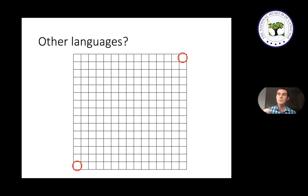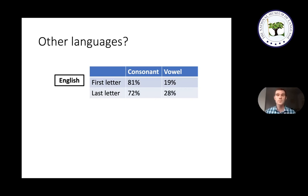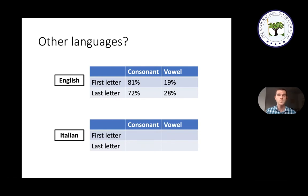To think about this, I'll focus on just the two most basic categories: consonants versus vowels. In English, 81% of words start with a consonant and 19% with a vowel; and 72% of words end with a consonant and 28% with a vowel. So in English, both first and last positions are dominated by consonants. But Italian looks very different. In Italian, the first letters are similar — 77% start with consonants. However, Italian words overwhelmingly end with vowels: 86% of Italian words end with a vowel. So in Italian, unlike English, the first and last letter positions are quite different.